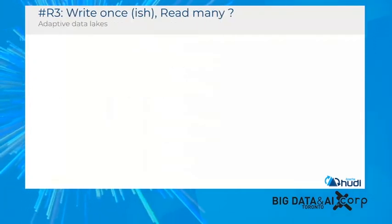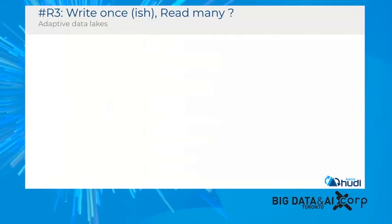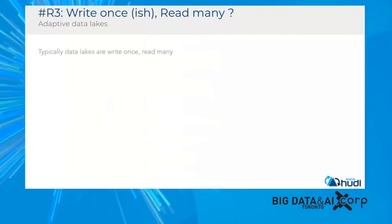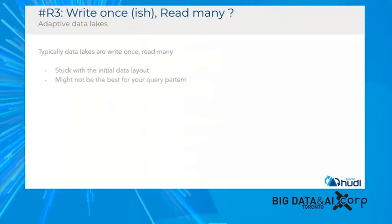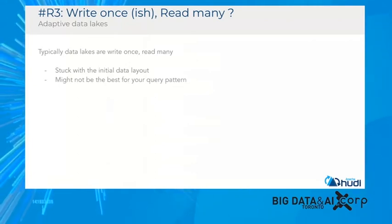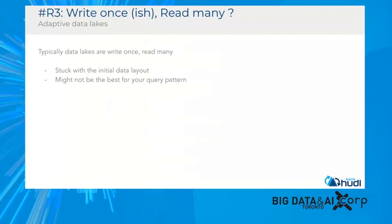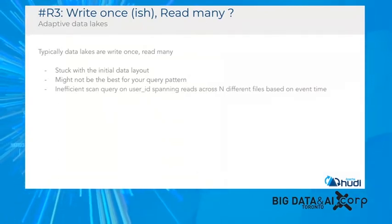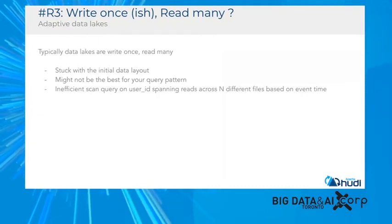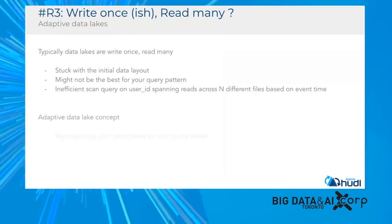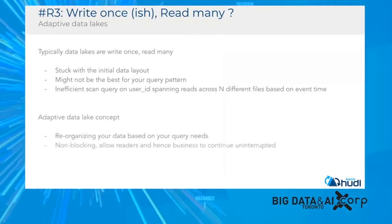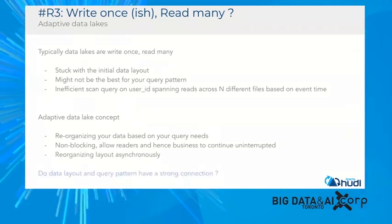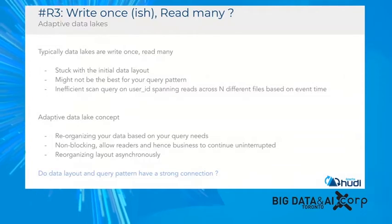Data lakes are typically write-once, read-many, but you're stuck with the initial data layout, which may not be optimal over time. You may realize your query pattern is very different from your data layout — for example, aggregating on time but accessing data by user ID, spanning many files and leading to degraded performance. The concept is: can you reorganize your data based on your needs, asynchronously and non-blocking, allowing readers and business operations to continue uninterrupted? The question is whether data layout and query pattern have a strong connection, and if so, what can be done about it.